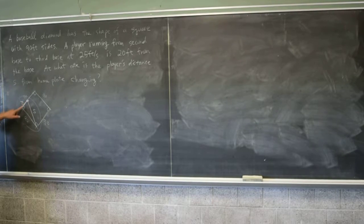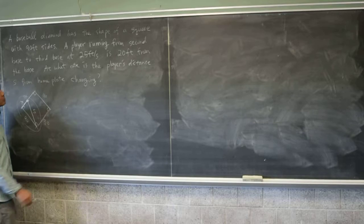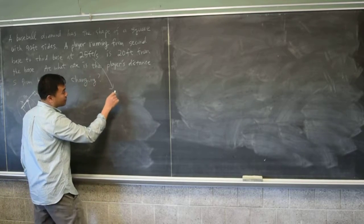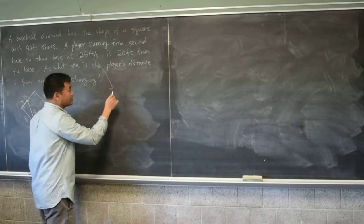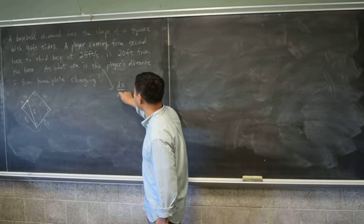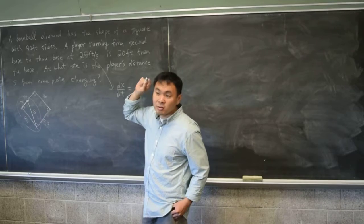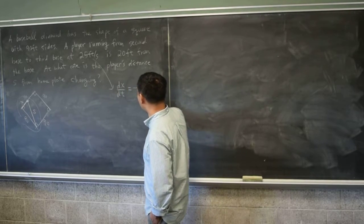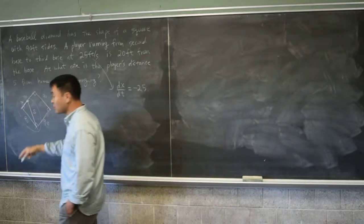Okay. So we appointed x to be this side. Then this 25 feet per second should be encoded as what? It's the rate of change of... dx/dt. dx/dt is equal to... Negative 25. Negative 25. Thank you, because this is shrinking. So it should be negative.